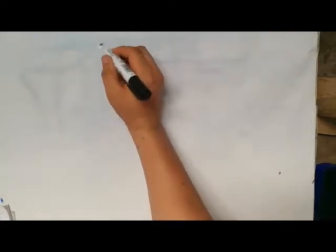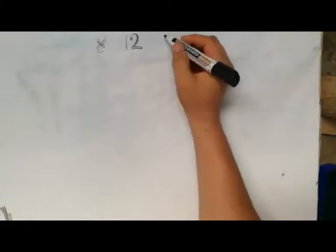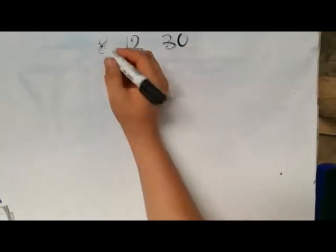The next method is the one most people like using — it is called the division method. In this method, we place the numbers in a table and start dividing them with numbers that leave no remainder, until all of them become 1. When they are all 1, we multiply the divisors we used and get our LCM. Let's stick with the numbers 8, 12, and 30.